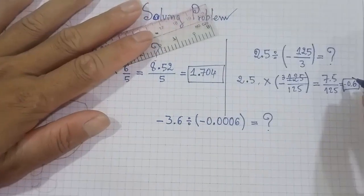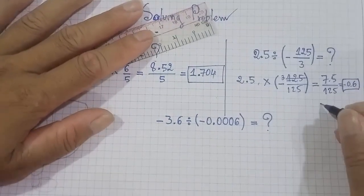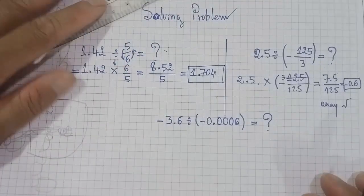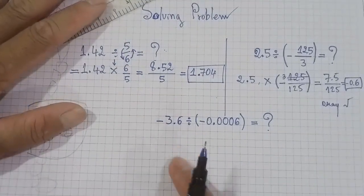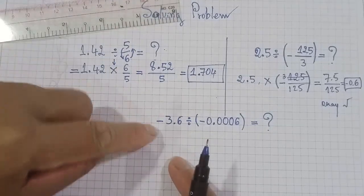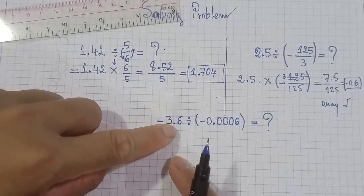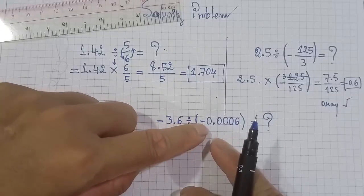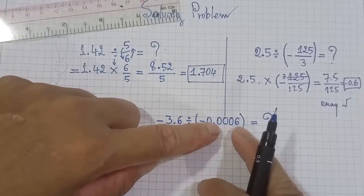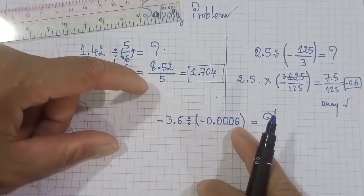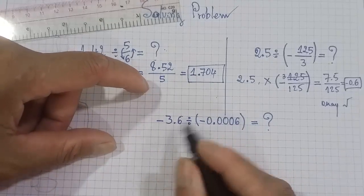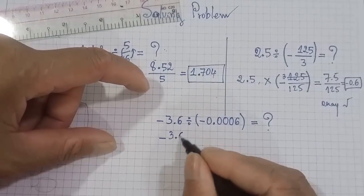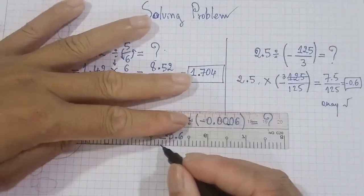The final answer. Okay. Yes, that's the final. Problem three, you can see negative 3.6 divided by negative 0.0006. So it's simple, we write like this, it's equal.